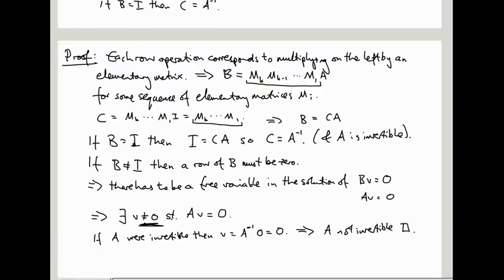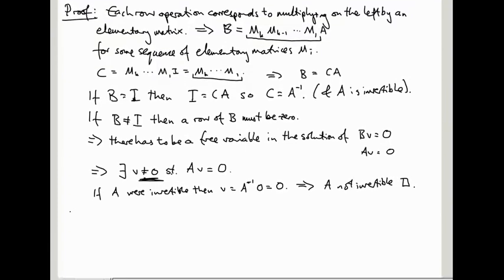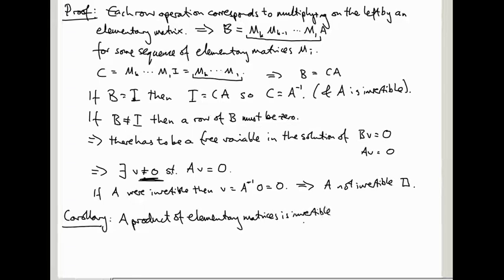A really nice corollary of this is the following. So a product of elementary matrices is invertible. And conversely, and this is the nice bit, any invertible matrix is a product of elementary matrices.